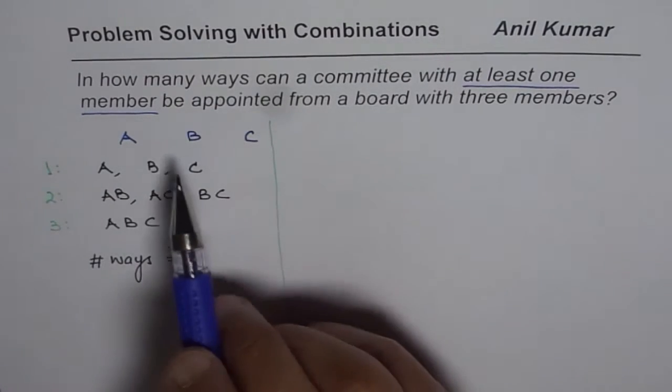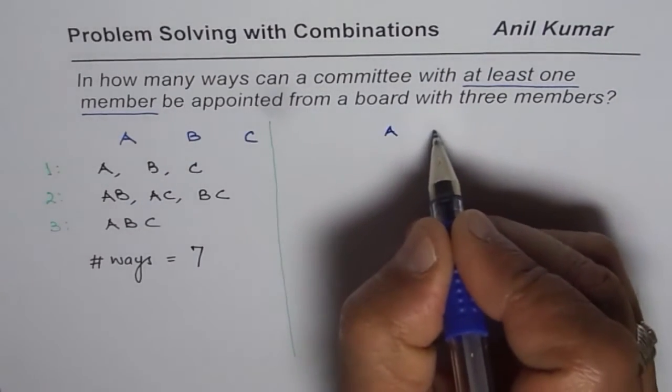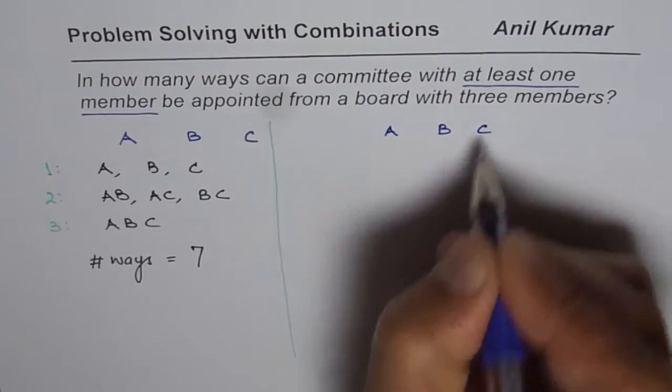Now the alternate method is kind of like this. Let's again begin with the three members A, B, C. So we again have these three members A, B, C.